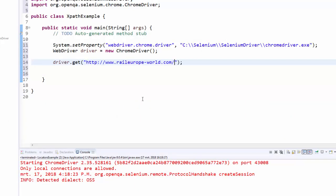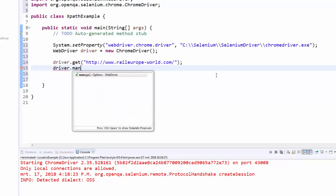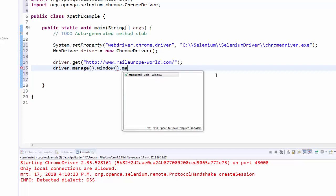For time being just understand how to use the XPath locator. For this example I am going to use raileuropeworld.com. We have to maximize it. Make it as a mandatory step. manage.window.maximize.